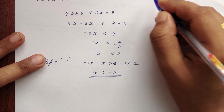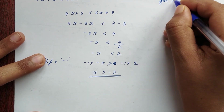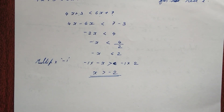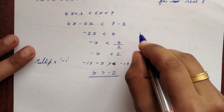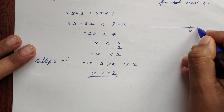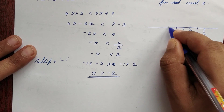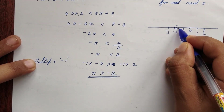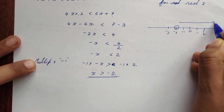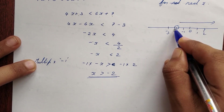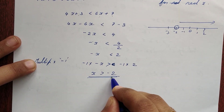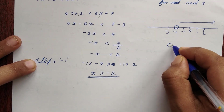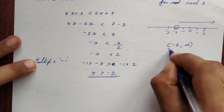Multiplying both sides by -1 and flipping the inequality sign: x > -2. So the solution for all real numbers is x > -2, written as the interval (-2, +∞). This is the final answer.